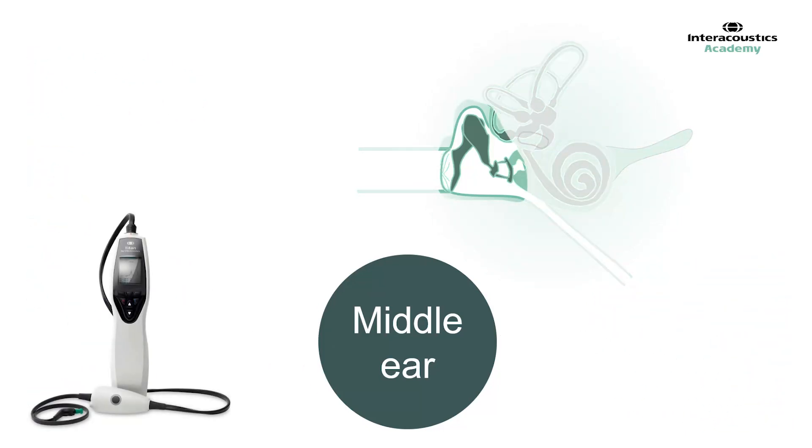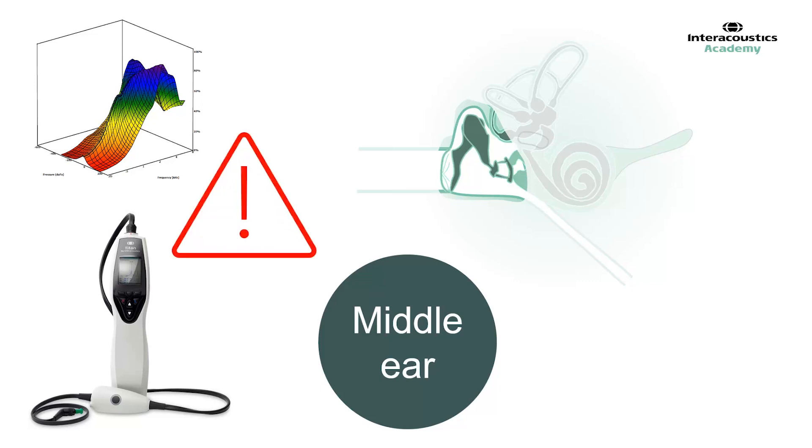Tympanometry is a popular and valuable test of middle ear function, and in particular wideband tympanometry can help identify specific problems relating to the middle ear in detail. However, abnormal tympanometry results combined with raised air conduction ABR thresholds are not sufficient to confirm that the hearing loss is being caused by the middle ear problem.